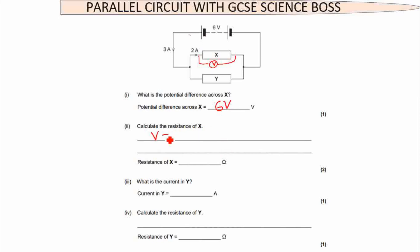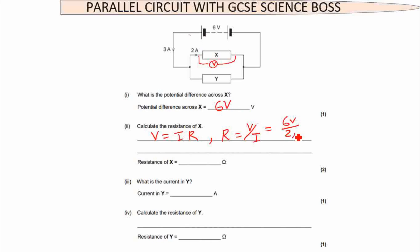Calculate the resistance of X. We know the formula is V = IR, so rearranging gives R = V divided by I. V is 6 volts, and the current through X is 2 amperes, so that gives a resistance of 3 ohms.